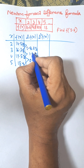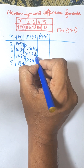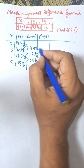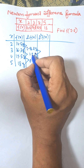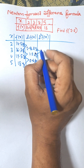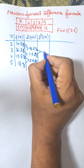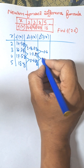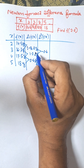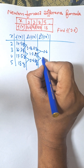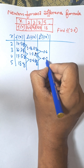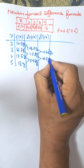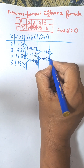Now we need to find the second order differences: del y₁ minus del y₀ equals del square y₀. That is 1.2 minus 1.8, which equals minus 0.6. Then 0.5 minus 1.2 equals minus 0.7, which is del square y₁.